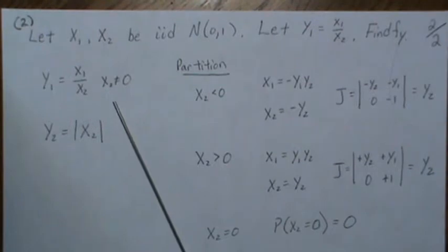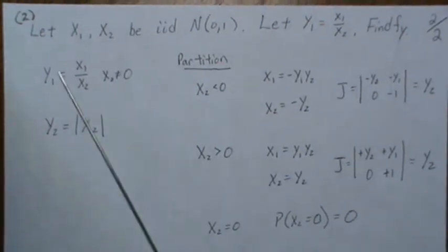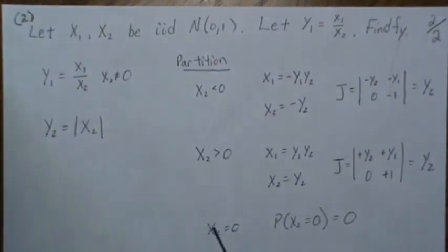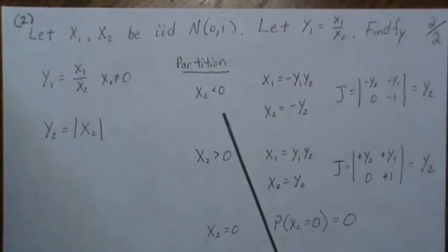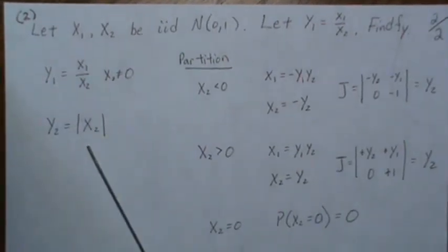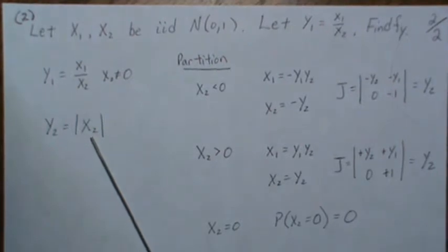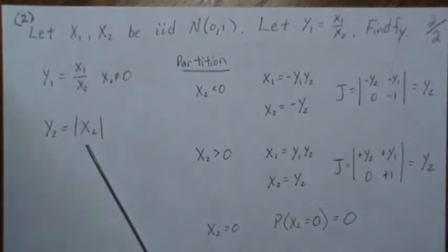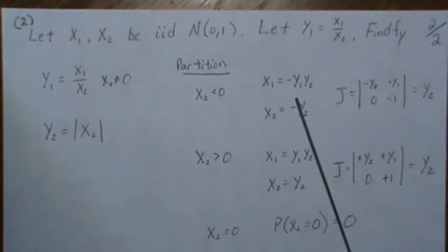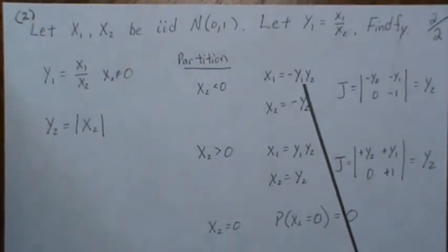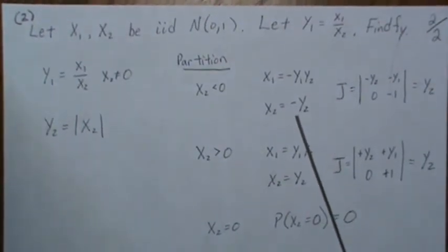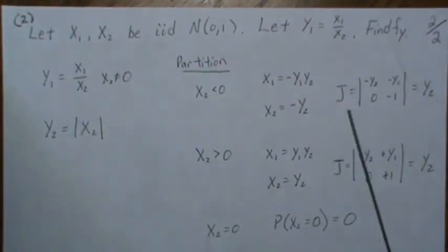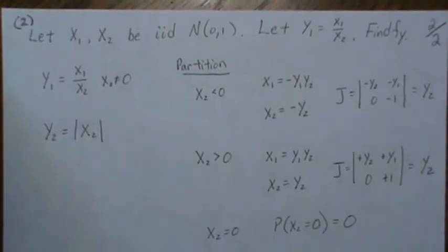For X2, we partition it to X2 less than 0, X2 greater than 0, and X2 equals 0. Remember X2 can't be 0 in this case. When X2 is less than 0, this becomes minus X2 to make it positive, and then the transformation becomes this: minus Y1Y2, minus Y2. The Jacobian becomes this, which is just Y2.